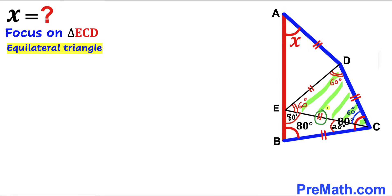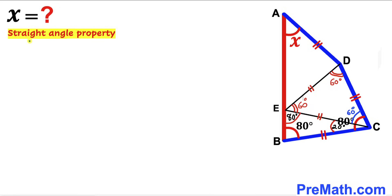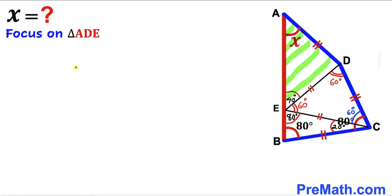Now let's recall the straight angle property. Focusing on the straight angle of 180 degrees at point E, we know one angle is 80 degrees and another is 60 degrees, so the remaining angle AED has got to be 40 degrees. Now let's focus on triangle ADE for our final step.